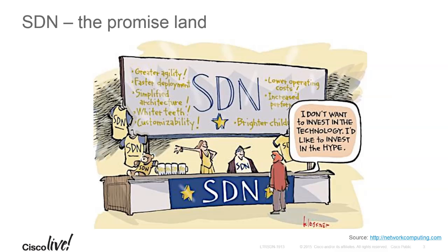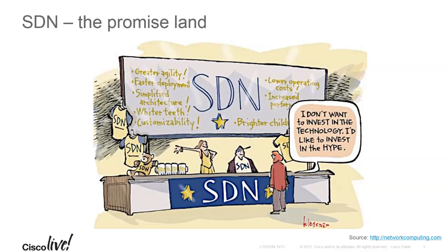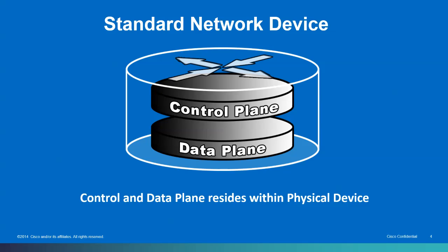It's always good when talking about SDN to do a level set. SDN is one of those words that has been hyped up and means a lot of different things to different people. With standard network devices, the control plane and data plane exist in one entity, so if you go to a router or switch, you configure the device and that configuration controls how packets are forwarded.